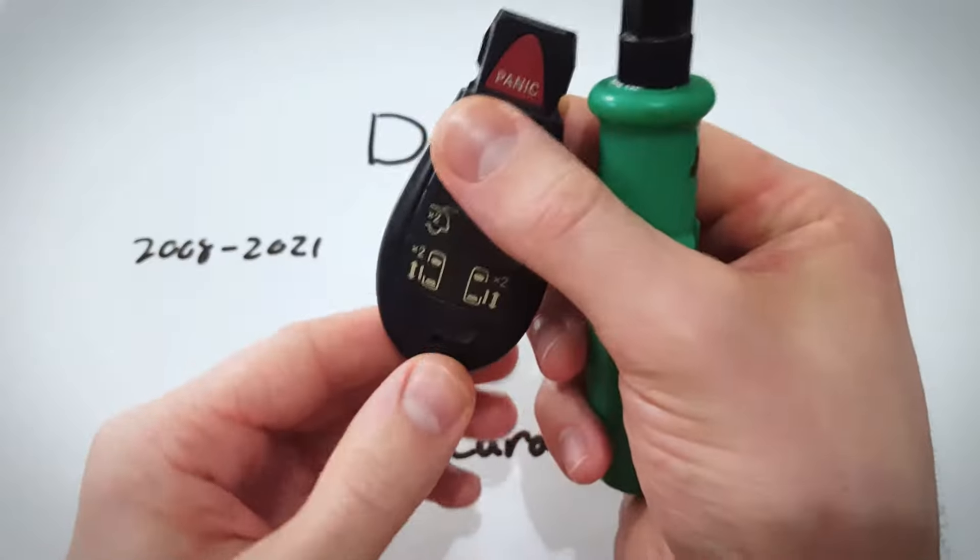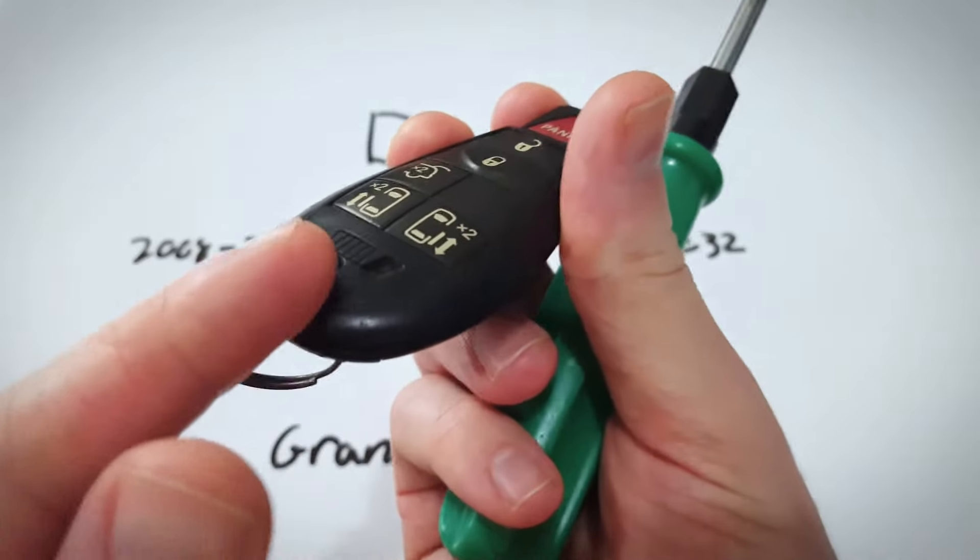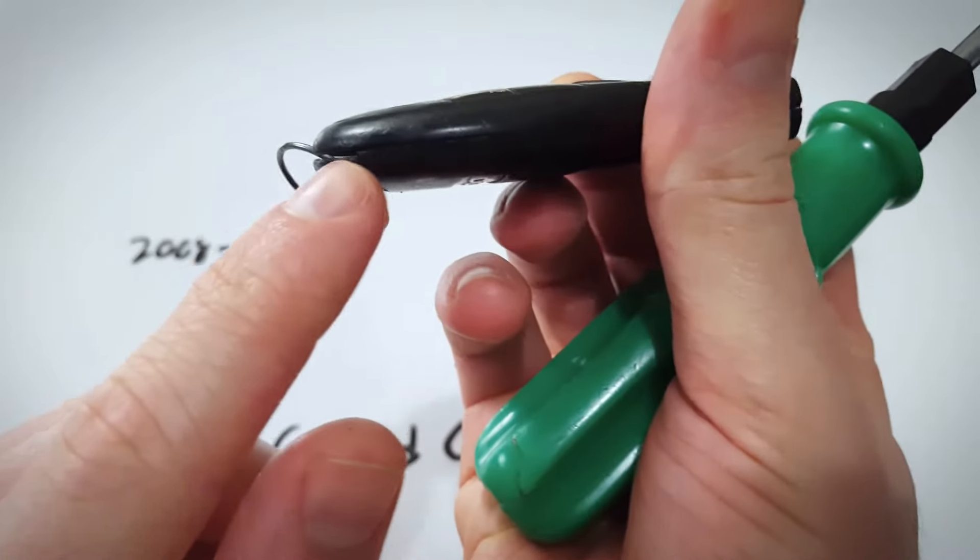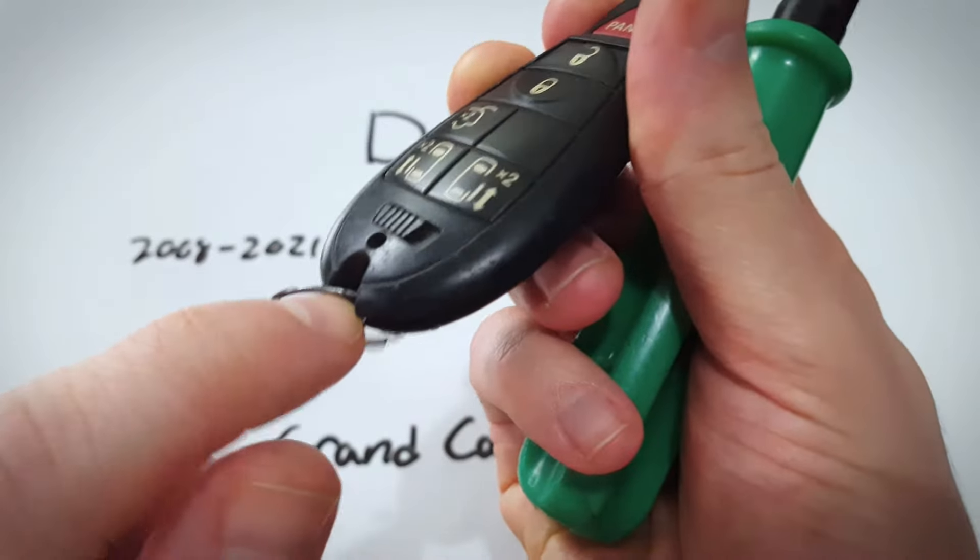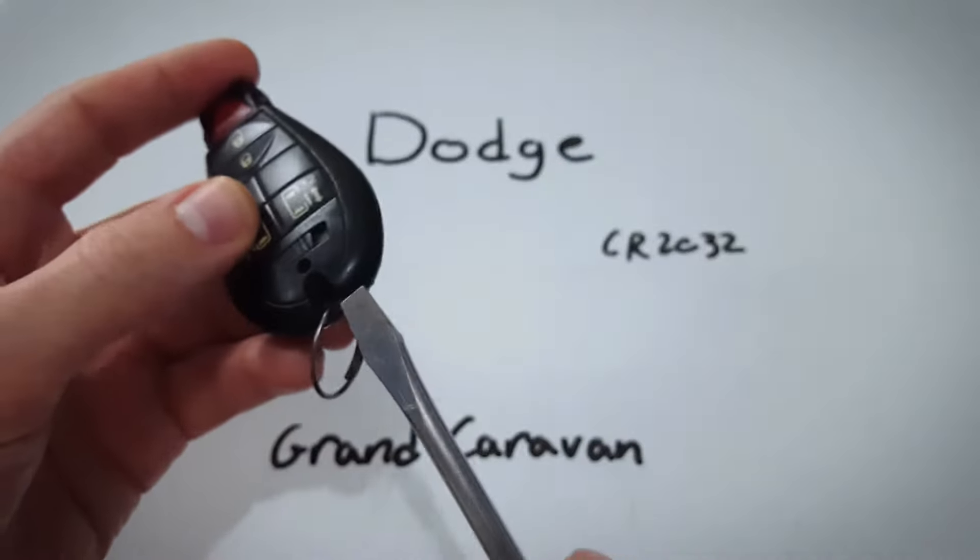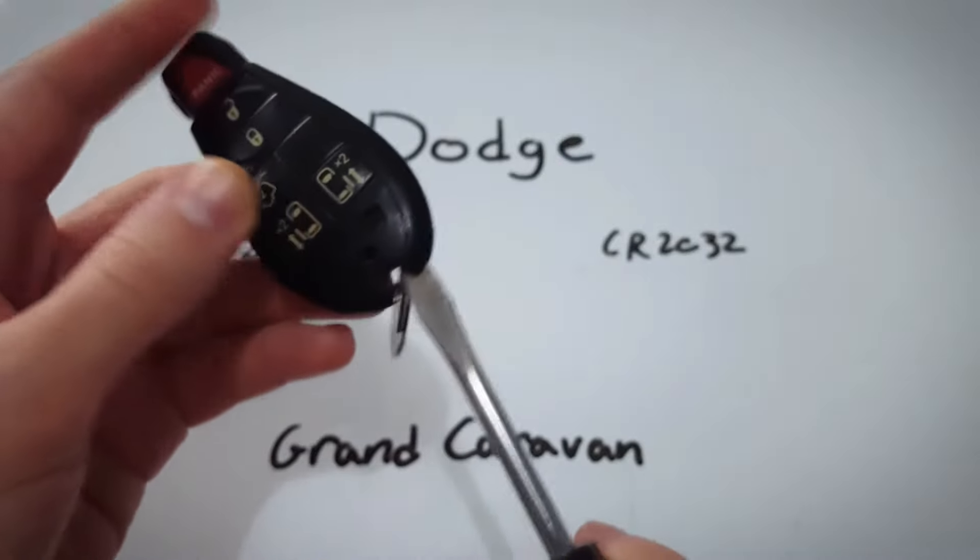If you look right where this keyring is, you can see there is this little indentation in the plastic and where the seam meets that little indentation, kind of this corner right here. I'm going to take our flathead screwdriver, find that corner and just push in.